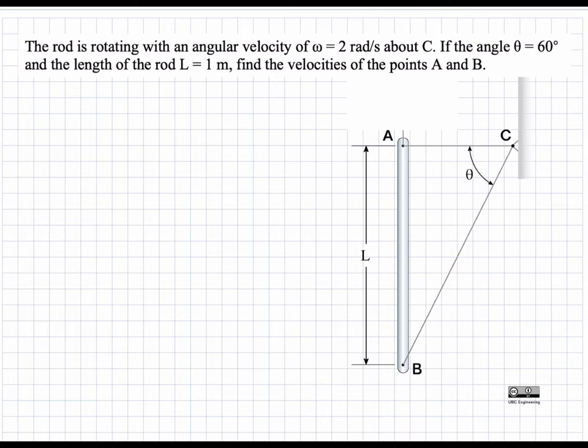So we start with our kinematic diagram. We draw our rod AB and we draw the velocities. Since we're told that it's rotating about C, we know that C over here will be our instantaneous center of zero velocity ICZV.